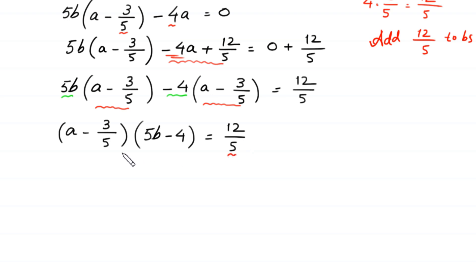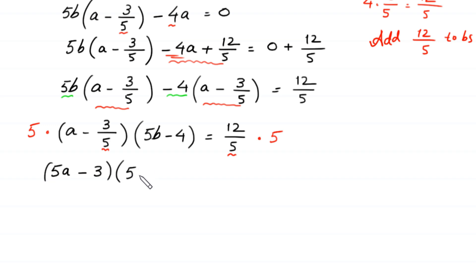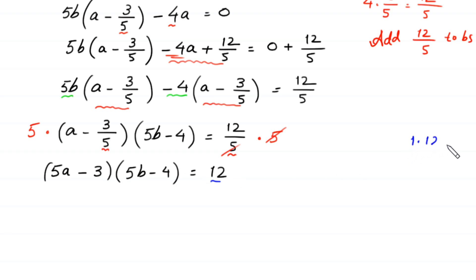Because both sides contain a factor of 5, we multiply both sides by 5. The left side becomes (5A minus 3)(5B minus 4), and the right side gives 12. Now, 12 can be factorized as 1 times 12, 12 times 1, 2 times 6, 6 times 2, 3 times 4, and 4 times 3.